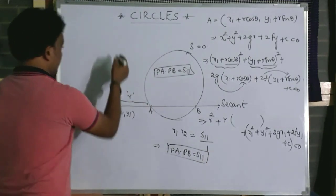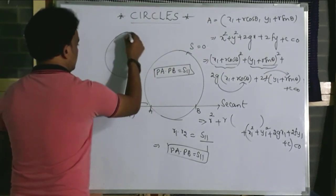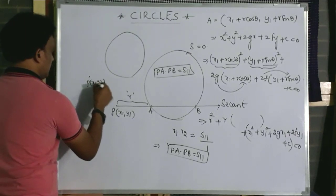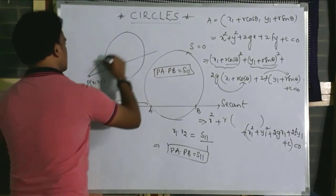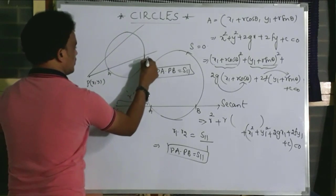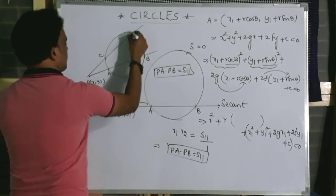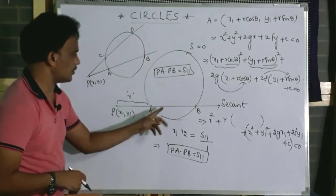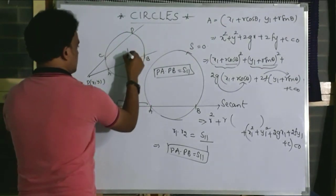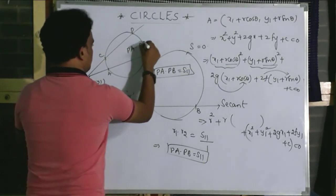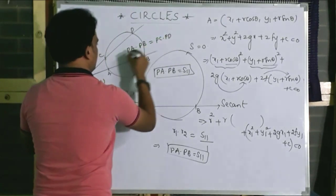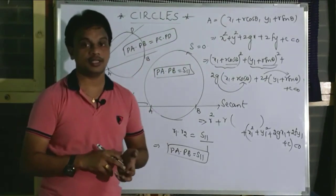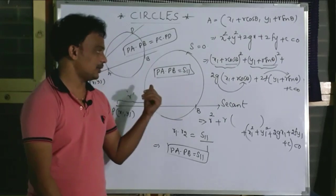From this, I can say one more thing. For the circle S equals 0, from the exterior point P(x1, y1), drawing two secants which intersect the circle at two points — PAB is a secant, PCD is another secant. According to this, PA into PB equals PC into PD. Very important result, especially from an objective point of view.